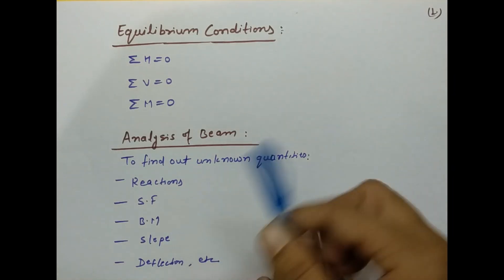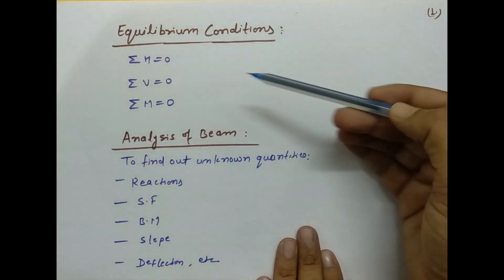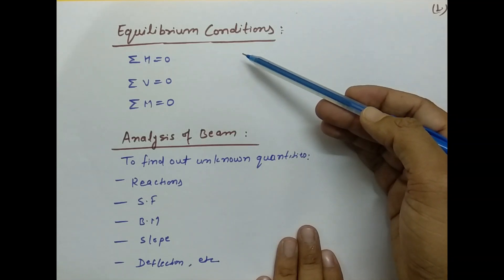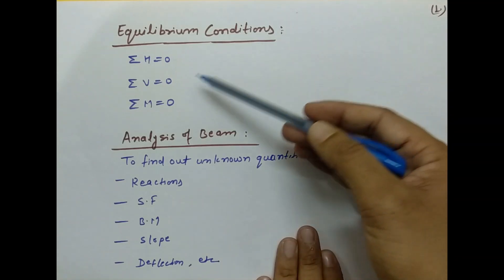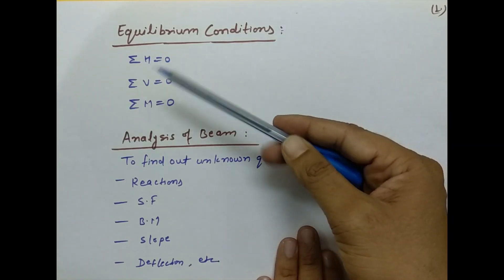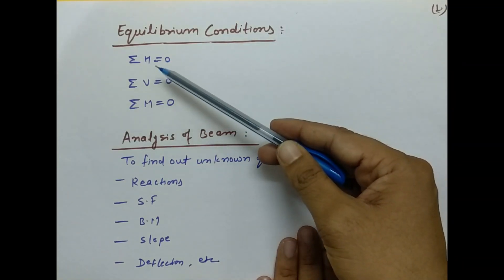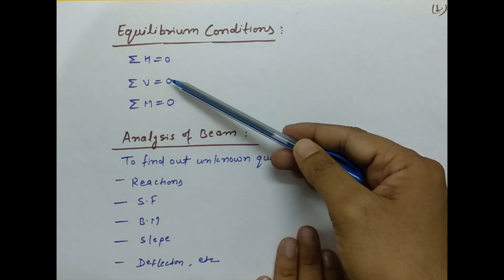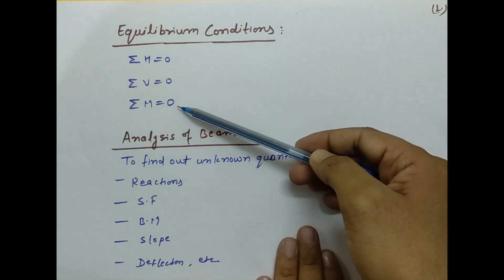First we will understand some basic terms like equilibrium conditions. There are three equilibrium conditions: summation of H is equal to zero, summation of V is equal to zero, and summation of M is equal to zero.